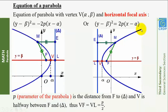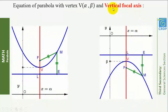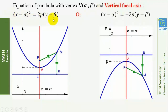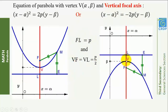Now, an equation of a parabola with vertex V(α, β) and vertical focal axis is (x − α)² = 2p(y − β) or (x − α)² = −2p(y − β). When we have ±2p(y − β), the focal axis is parallel to y'y. If the coefficient of y is negative, the parabola opens downwards; if positive, it opens upwards.